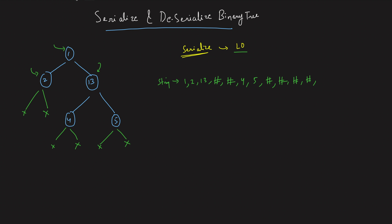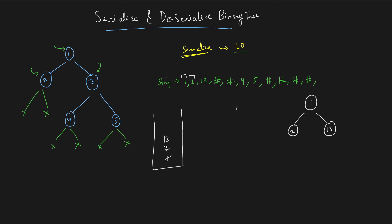Now it's time to deserialize. If the string is null, you say there is no tree. Otherwise, pick up the first value before the comma — that's 1. Put that into a queue data structure, and at the same time create a root node with value 1. Start iterating on the queue: you get 1, and you say 1's left will be the next guy — that's 2. Create node 2, set 1's left to 2, and insert 2 into the queue. Then 1's right is the next guy — that's 13. Create node 13, set as 1's right, and insert 13.